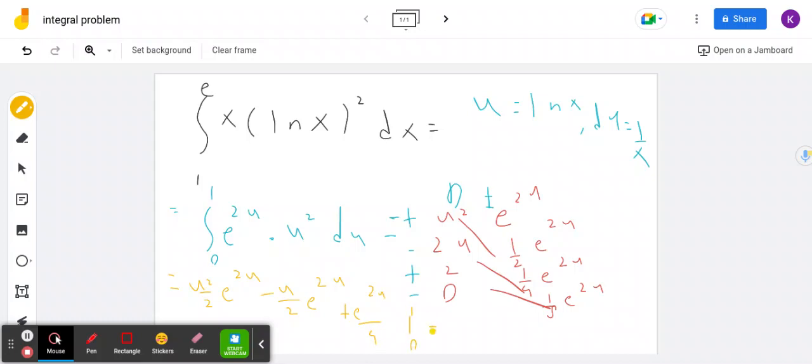And so we can see that if you plug in 1, what we get is we get e to the 2 over 2. Then we get e to the 2 over 2 again. So this cancels out. And so we get e to the 2 over 4.